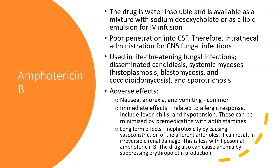Amphotericin B has a lot of side effects. Commonly, they include nausea, anorexia, and vomiting. The drug also causes some immediate side effects. These immediate side effects are related to the allergic response and include fever, chills, and hypotension. These allergic manifestations can be minimized by giving antihistamines before starting the amphotericin B infusion — that can minimize a lot of these allergic side effects.